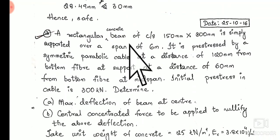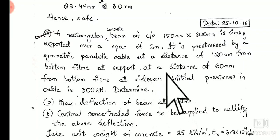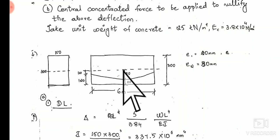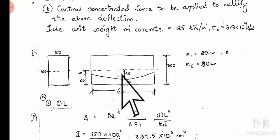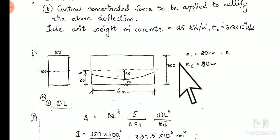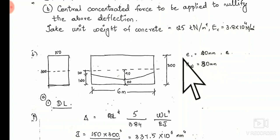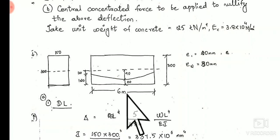At mid-span, the cable is located at a distance of 60 mm from the bottom fiber. The eccentricity at mid-span is the remaining height: 150 minus 60 equals 90 mm. So E1 is equal to 90 mm and E2 is equal to 30 mm. The span is 6 meters.